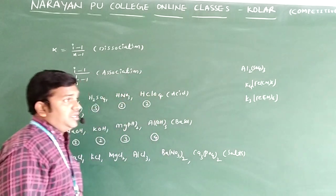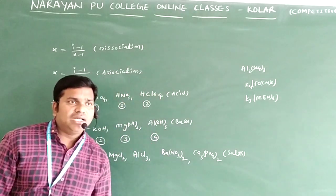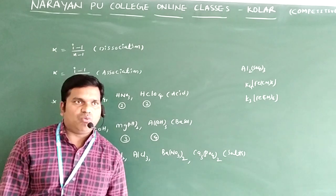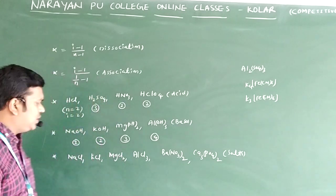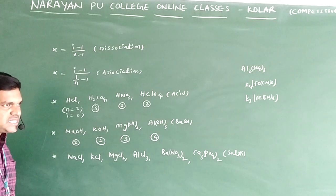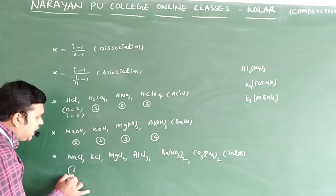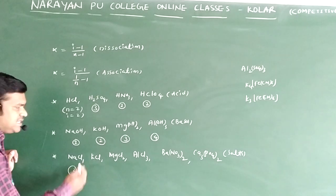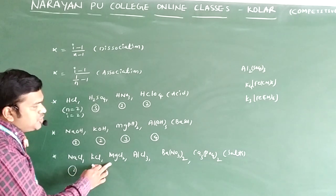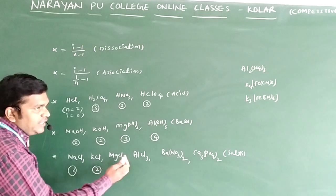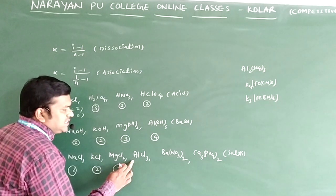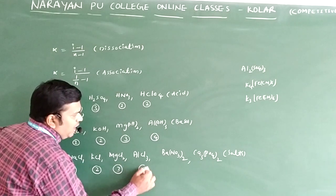For salts undergoing complete dissociation: NaCl → Na⁺ + Cl⁻, giving 2 ions so i = 2. KCl also gives i = 2. MgCl₂ → Mg²⁺ + 2Cl⁻, giving 3 ions so i = 3. AlCl₃ → Al³⁺ + 3Cl⁻, giving 4 ions so i = 4.